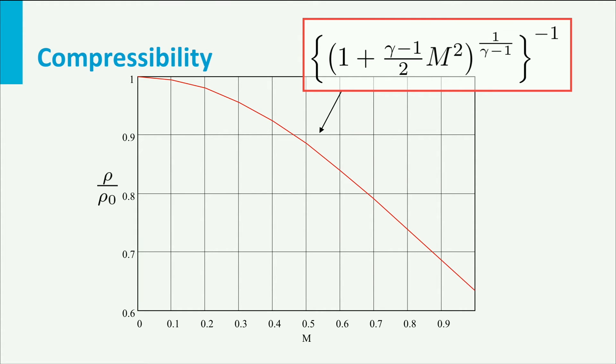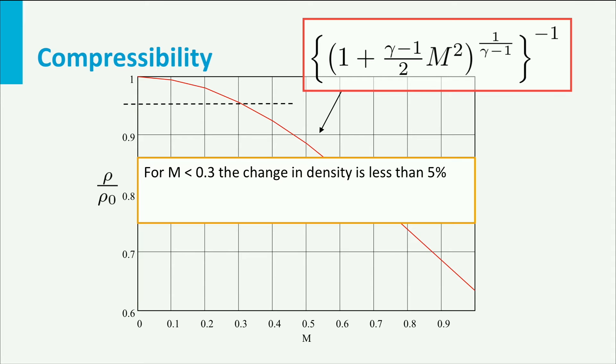At this slide you see the line that represents this equation. For a density ratio of 0.95, meaning there is a difference in density of 5%, the Mach number is 0.3. This is the boundary that in aeronautical engineering has been set for compressibility. We assume that a flow is incompressible when the Mach number is lower than 0.3, so when the change in density is less than 5%.